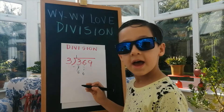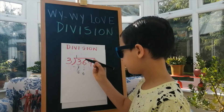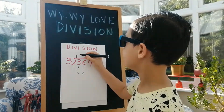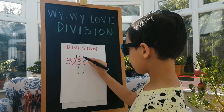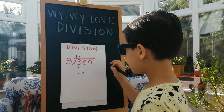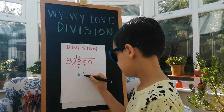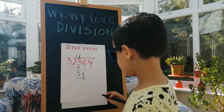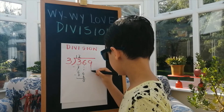And how many 3's are in 6? That is 2. 3 times 2 is 6, minus 6 equals 0. Put the next number all the way down.